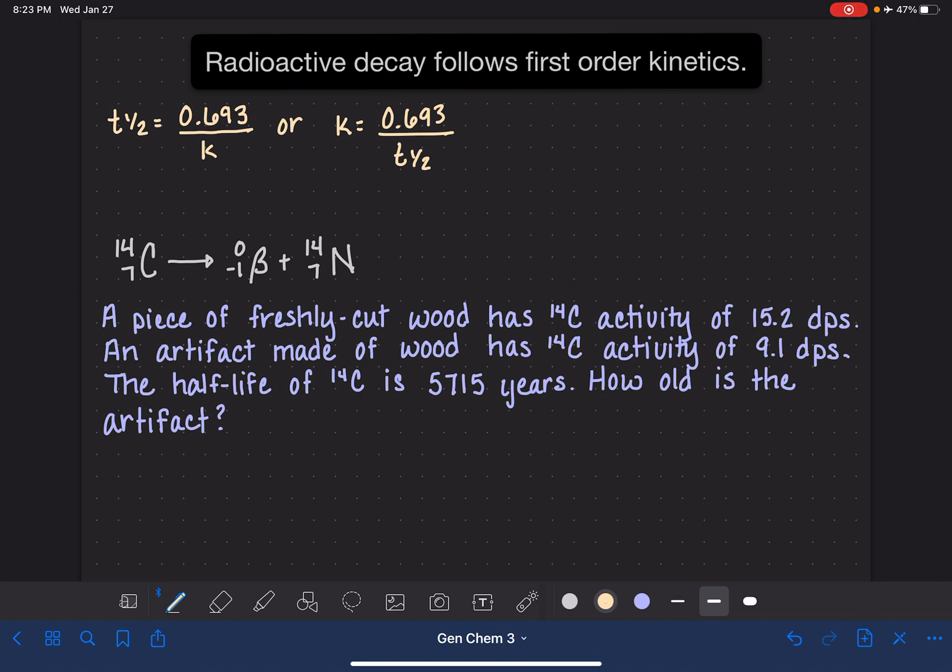In addition to the half-life equation, we can also use the first-order kinetics equations that we use to calculate the concentrations of substances at any given time during the reaction. So this equation that we learned, the natural log of A at time t is equal to negative kt plus the natural log of A at time 0. This equation can be used to calculate the concentration of A at any time in the reaction, as long as you know the rate constant and the starting amount of A.